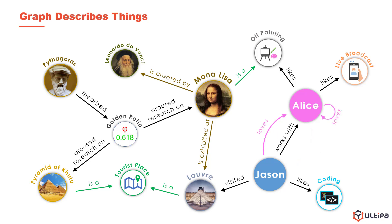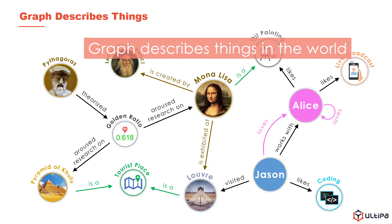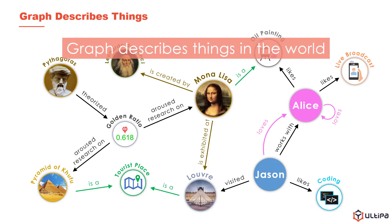The essence of graph is to describe things of the world, whatever happened or not, fact or imagination. Let's discuss some scenarios where graph helps us understand the world and solve the problems in our life.